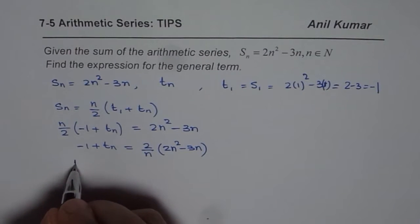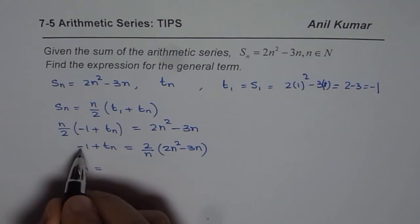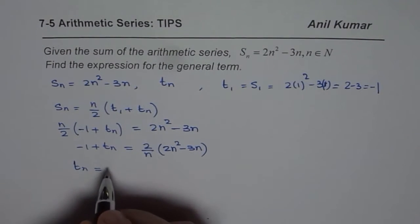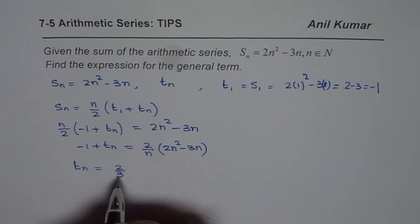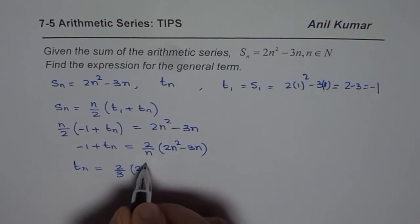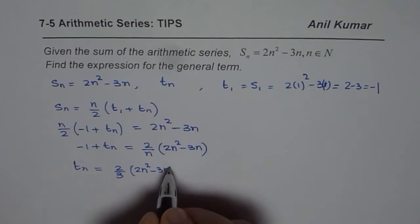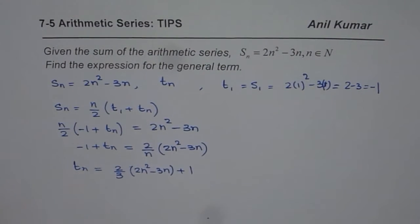Or we can write t_n as equal to, let's take 1 on this side now, so it becomes plus 1. So it becomes 2 over n times 2n² minus 3n plus 1. So that is what t_n is.